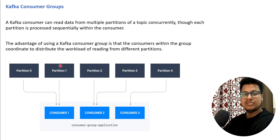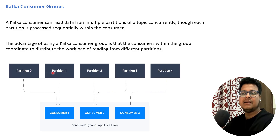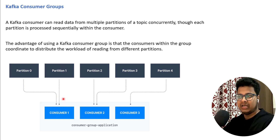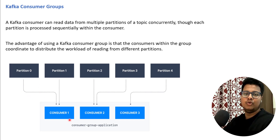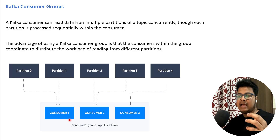As shown in the diagram, there are five partitions, and I created a consumer group application with three consumers. Three consumers can read the partitions concurrently. The consumer group application takes care of coordinating which consumer is reading from which partition. Consumer one is reading partitions zero and one concurrently; similarly for consumer two and consumer three. But one partition cannot be read by two consumers — it's a one-to-one mapping, because you don't want duplicates. Each partition will have its own consumer as a one-to-one mapping.